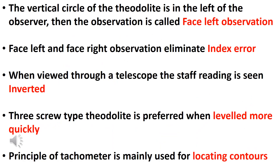The vertical circle of the theodolite is on the left of the observer — this observation is called Face Left Observation. The vertical circle on the right side of the observer is called Face Right Observation.